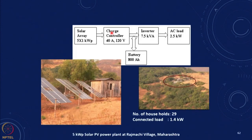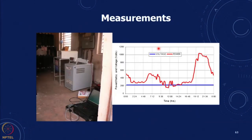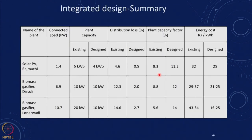To illustrate affordable access, in a small village in Maharashtra there is a solar array, charge controller, battery, and AC load. Most of the load is in the evening, resulting in a low capacity factor and high average prices. Some systems use biomass gasifiers alongside PV, with energy costs of the order of 30 to 40 rupees per kilowatt hour. Systems are often oversized because demand estimation is not accurate.